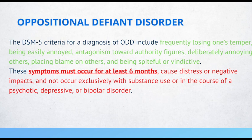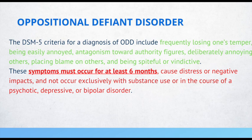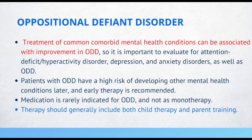Oppositional Defiant Disorder (ODD): DSM-5 criteria include frequently losing one's temper, being easily annoyed, antagonism toward authority figures, deliberately annoying others, placing blame on others, and being spiteful or vindictive. These symptoms must occur for at least 6 months, cause distress or negative impacts, and not occur exclusively with substance use or in the course of a psychotic, depressive, or bipolar disorder.